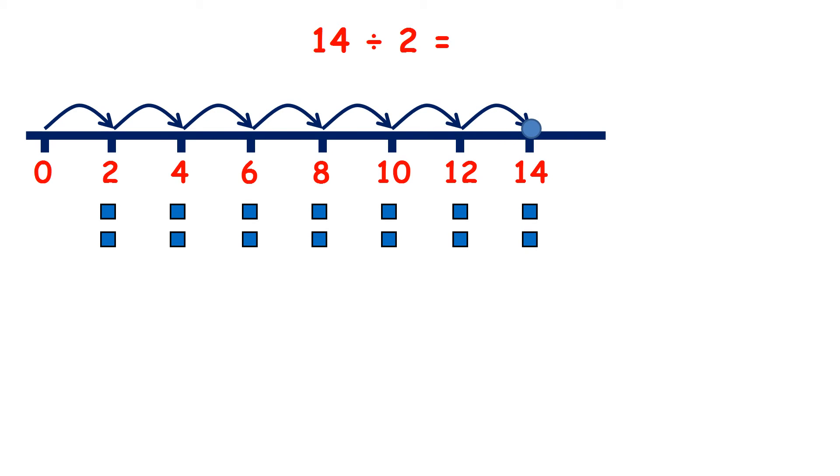And we needed 1, 2, 3, 4, 5, 6, 7 jumps to get to 14. So 14 divided by 2 is 7.